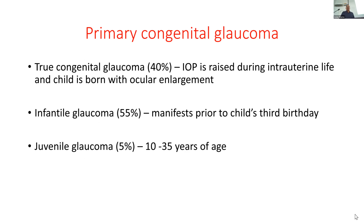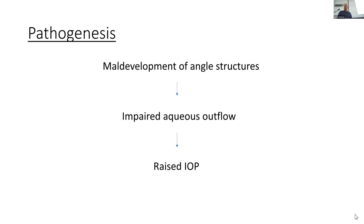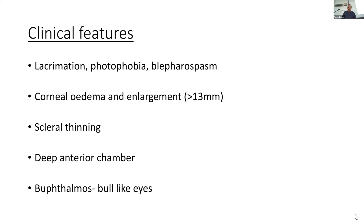Primary congenital glaucoma constitutes 40%. Rise of intraocular pressure occurs in intrauterine life — the child is born with glaucoma, and 25% manifest before the child's third birthday. Juvenile glaucoma is around 5%, occurring from 10 to 35 years of age. In all these, there is maldevelopment of the angle structures, impediment in aqueous drainage, and resultant rise of intraocular pressure. In congenital glaucoma, if the mother comes with a child who is unable to open the eyes, there is watering and intolerance to light — your first suspicion should be congenital glaucoma.